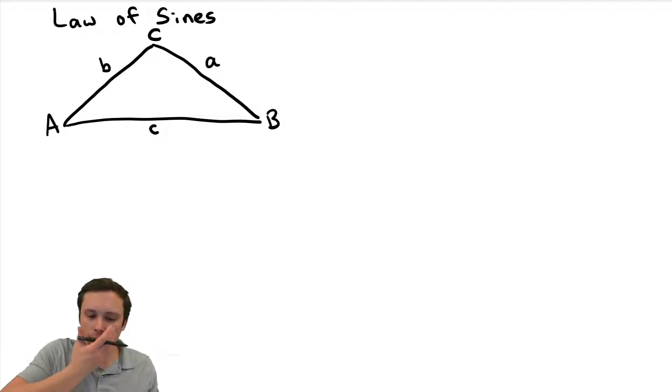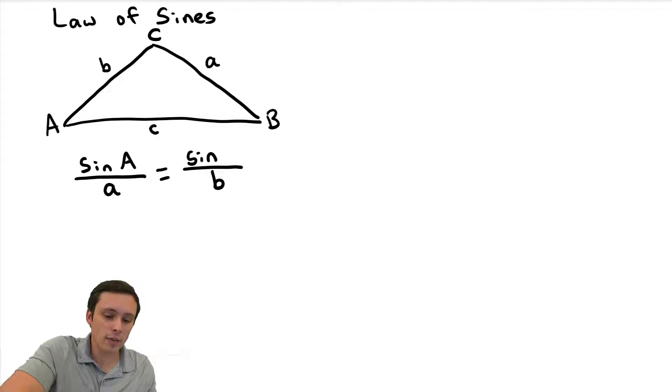So what is the law of sines? Well, it basically says that if you do the sine of an angle and divide it by the side length across from it, that should be equal to the sine of any other angle in the triangle, like I could pick B, and I could divide it by the side across from it. That's what it says. Notice that I could easily, in this case, have replaced the B's with C's. All that matters here is that we're saying it's the sine of an angle divided by the opposite side from it, and those will always produce equal ratios.